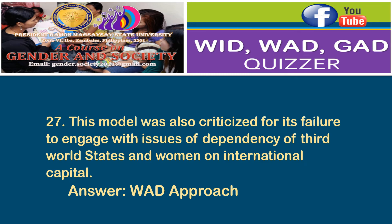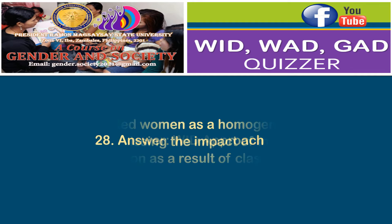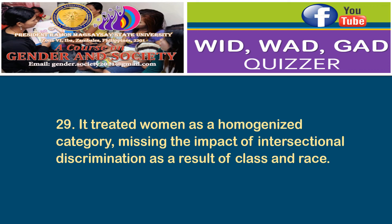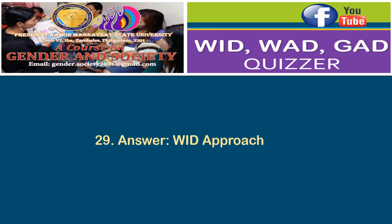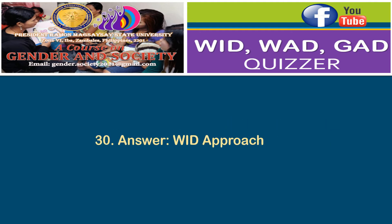27. This model was also criticized for its failure to engage with issues of dependency of third world states and women on international capital. Answer: WID approach. 28. It failed to factor women's reproductive and informal sector work into its analyses. Answer: WID approach. 29. It also treated women as a homogenized category, missing the impact of intersectional discrimination as a result of class and race. Answer: WID approach.